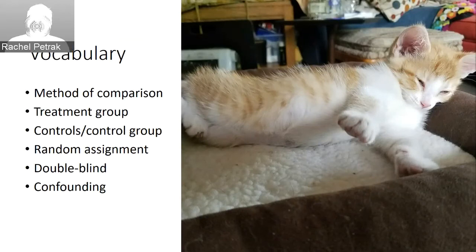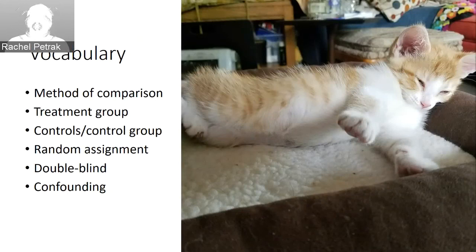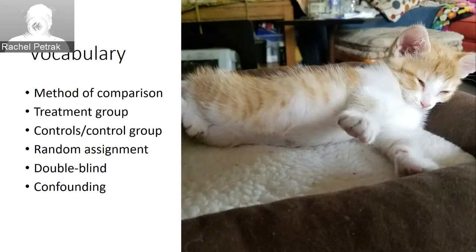We also discussed the idea that a study could be blind or double blind. When a study is blind, participants don't know what condition of the study they're in. When a study is double blind, neither the participants nor the investigator know what group the participants are in. Finally, confounding is when a third variable is associated with both your exposure and your outcome. It's important to identify possible confounding variables so you can control for them statistically — an idea we'll revisit more in Unit 2.